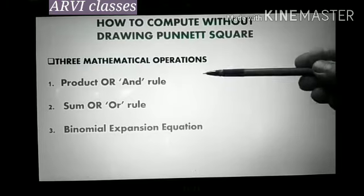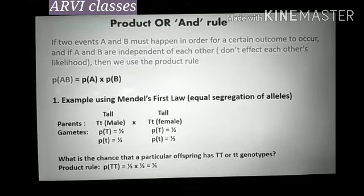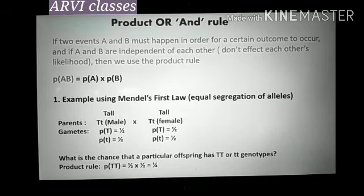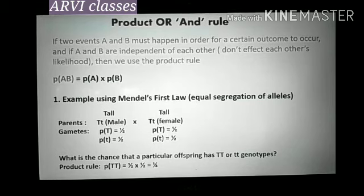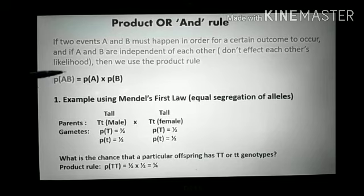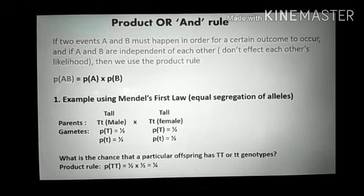These are the product rule, sum rule, and the binomial expansion equation. What is the product rule or AND rule? It is also known as the multiplication rule. If two events A and B must happen in order for a certain outcome to occur, and if A and B are independent of each other — meaning they are not affecting the likelihood of each other — then we use the product rule. The combined probability of a particular event is equal to the multiplication of the probability of each event.